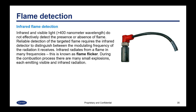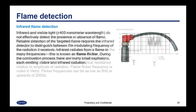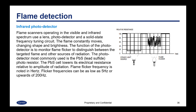Infrared and visible light — greater than 400 nanometer wavelength — do not effectively detect the presence or absence of flame by themselves. Reliable detection requires that the infrared detector distinguishes between the modulating frequency of the radiation it receives. Infrared radiation from a flame is in many frequencies — this is known as flame flicker. During the combustion process there are many small explosions, each emitting visible and infrared radiation. Flame scanners operating in the visible and infrared spectrum use a lens, photo detector, and a solid state frequency tuning circuit. The photo detector most commonly used is the PbS or lead sulfide photoresistor. The PbS cell lowers its electrical resistance relative to the amplitude of radiation. Flame flicker frequency is noted in hertz and can be as low as 5 Hz or upwards of 200 Hz.